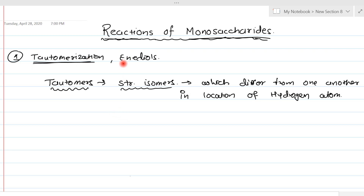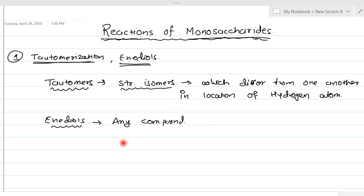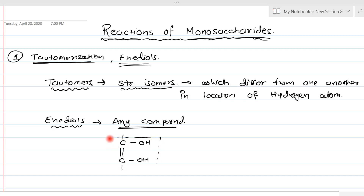The second important term we need to understand is enediols. Enediol is any compound having two hydroxyl carbons — one hydroxyl carbon and a second hydroxyl carbon — which are bonded with each other by a double bond. This carbon has four valencies; three are already occupied, and the fourth is this double bond. If any compound has such a structure within its larger structure, we call it an enediol.